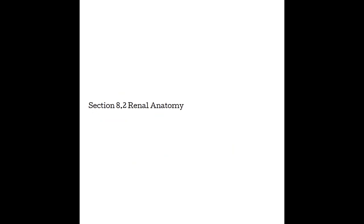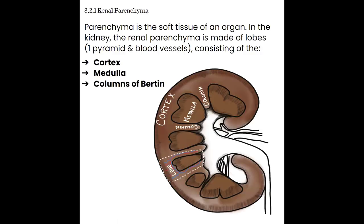Section 8.2: Renal Anatomy. The kidney is divided into four distinct areas: the renal parenchyma, renal sinus, collecting system, and hilum. The renal vasculature is also a very important part of renal anatomy. The parenchyma is the soft tissue of the kidney, made up of lobes — each lobe consisting of one pyramid and blood vessels. The renal parenchyma consists of the cortex, medulla, and columns of Bertin. The cortex is the outermost portion of the kidney, home to the renal corpuscle and the proximal and distal convoluted tubules.